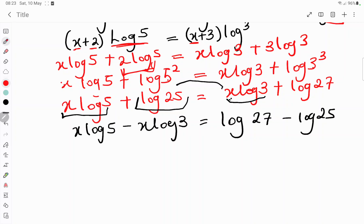At this point, we have to factor out the common term. The common term here is x and x. If you factor out the common term x, you will be left with log 5 minus log 3, because when you multiply x to everything, it gets x. And this is equal to log 27 minus log 25.